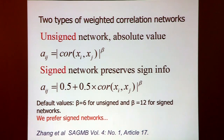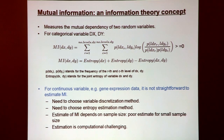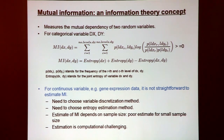The signed network keeps track of the sign of the correlation, distinguishing positive from negative relationships. Several papers, often written by computer scientists, use a completely different approach based on mutual information. Mutual information takes a central position in information theory — Shannon started it all — and is related to entropy.